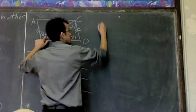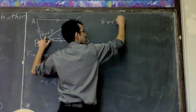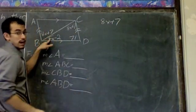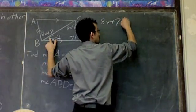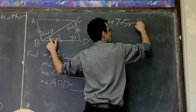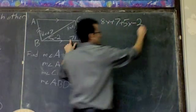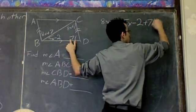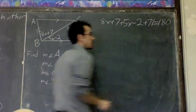So I'm going to say 8x plus 7 plus 5x minus 2 plus 71 equals 180.